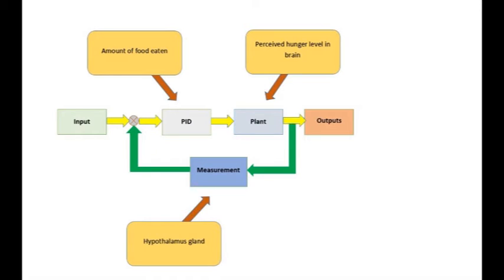The plant in the appetite feedback loop is the brain. In the brain, levels of hormones are continuously being measured to control our desire to eat. The measurement system is the hypothalamus gland.